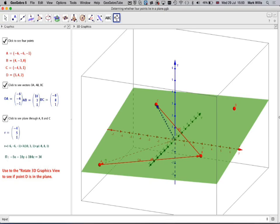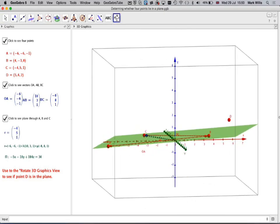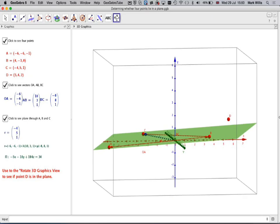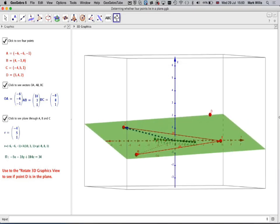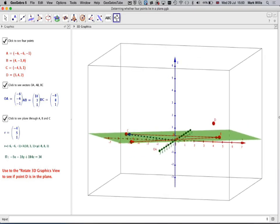So, if we now rotate this around and have a look at it from this angle, we can very easily see that D is actually not in the plane. We can see that the points A, B and C are in the plane, but obviously D is not in the plane. Okay, so just looking at different angles, if you like, we can very, very easily see that the point D is not in the plane.